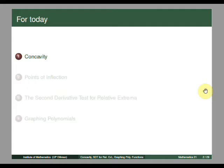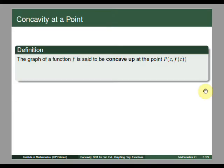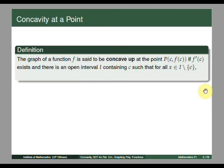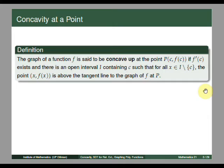The first part of this lecture introduces the notion of concavity of a function and its relation to the second derivative. We first define the concavity of the function at a point. We say that the graph of f is concave up at the point p with coordinates (c, f(c)) if f prime of c exists and there is an open interval i containing c such that for all x in i except c, the point (x, f(x)) is above the tangent line to the graph of f at p.